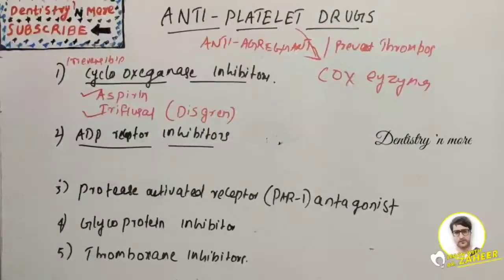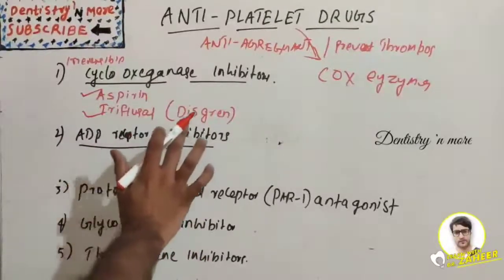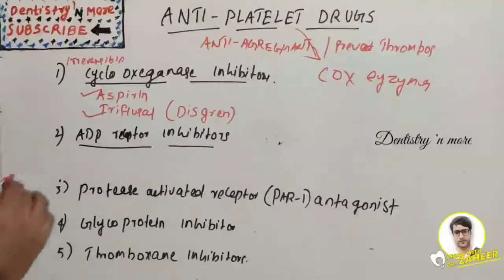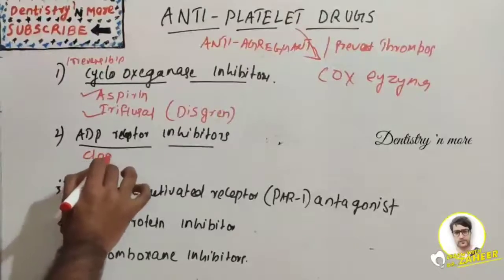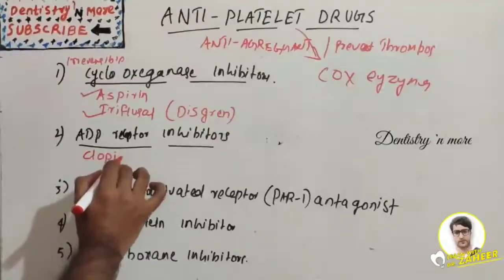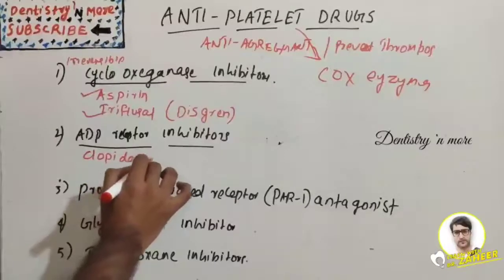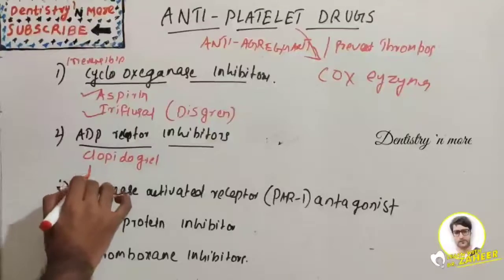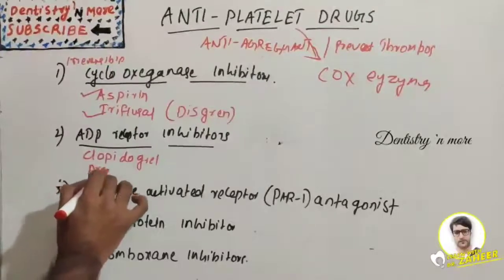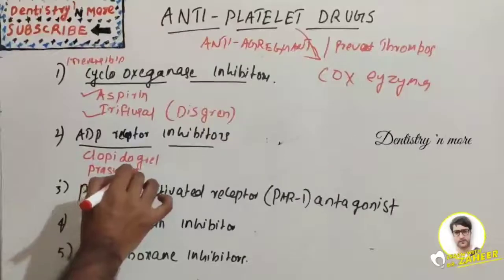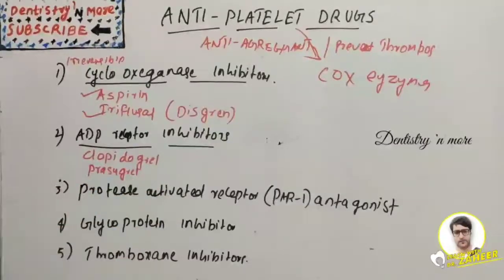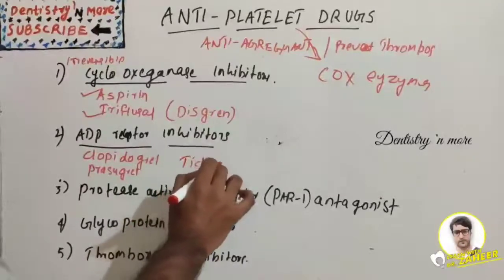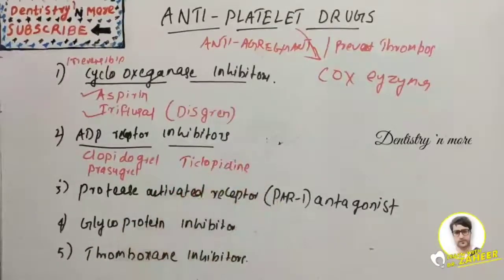The next category is ADP receptor inhibitors — adenosine diphosphate receptor inhibitors. The most common ones are clopidogrel, prasugrel, and ticlopidine.